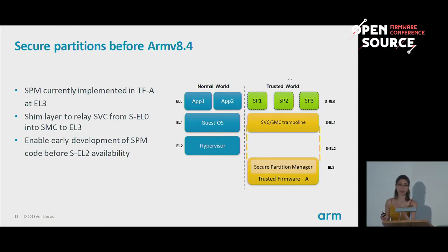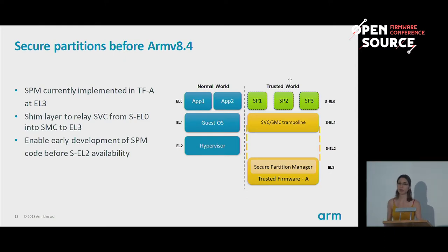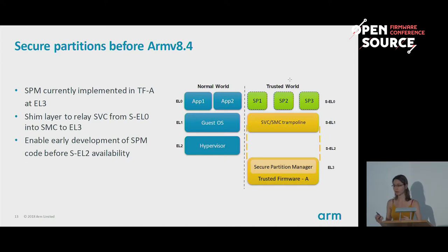Secure partitions run at Secure EL0 because there is no proper isolation between EL3 and Secure EL1 — putting secure partitions at Secure EL1 would defeat the purpose. We have a bit of glue code because architecturally it's not possible for Secure EL0 code to call directly into EL3 code — the way you do that is by executing an SMC (Secure Monitor Call) instruction, which is undefined for Secure EL0. So we relay SVCs from Secure EL0 code into SMCs, and that software architecture enables us to start implementing SPM with the current architecture.